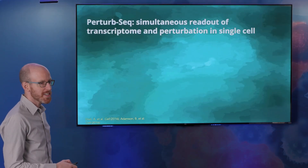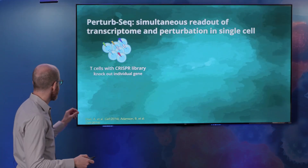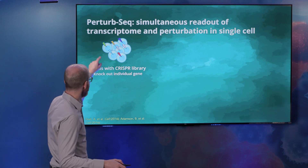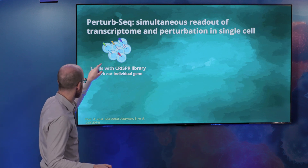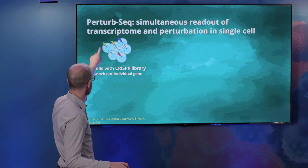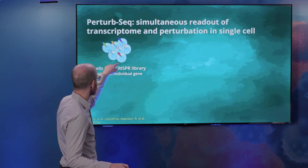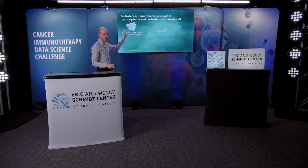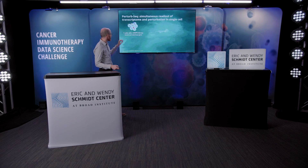Using the CRISPR-Cas9 gene editing technology, we can take T cells and for each T cell, knock out a specific gene of interest. So for instance, in this T cell we might have knocked out the gene TCF7, and in this T cell we might have knocked out the gene PDCD1. We can do these perturbations in parallel and grow up these T cells.